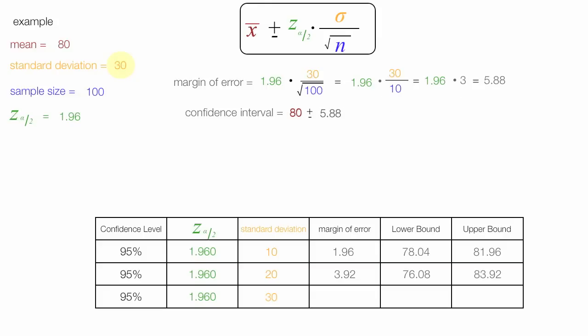So the lower bound is 80 minus 5.88, which is 74.12. The upper bound is 80 plus 5.88, which is 85.88. The margin of error is 5.88, and it's gone up quite a bit since the beginning. The lower bound is 74.12 and the upper bound is 85.88. Notice how, as the standard deviation increased, so has the margin of error.